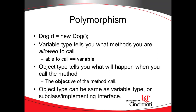The definition of polymorphism: the variable type tells you what methods you are allowed to call. The variable type is the type with which we are declaring the variable — in this case, Dog. Think the word 'able' is embedded in the word 'variable.' The object type, on the right, tells you what will happen when you call that method — it's the objective of the method. So variable type tells you what methods you're allowed to call; object type tells you what will actually happen when you call those methods. And that's the definition of polymorphism.